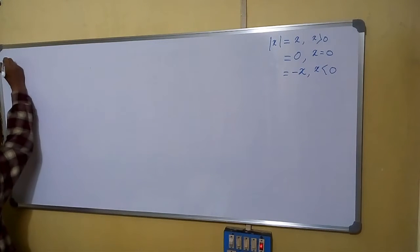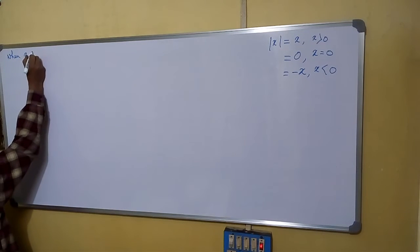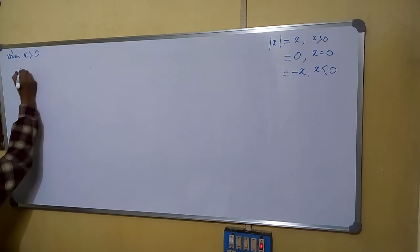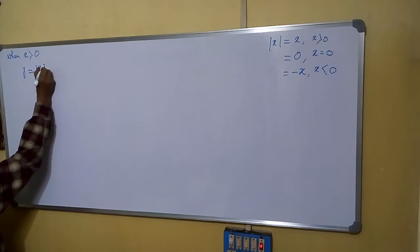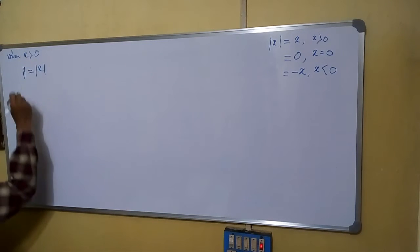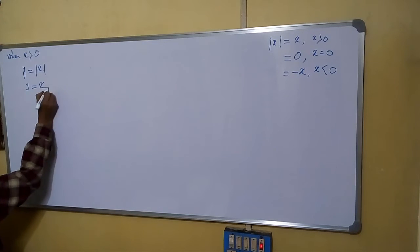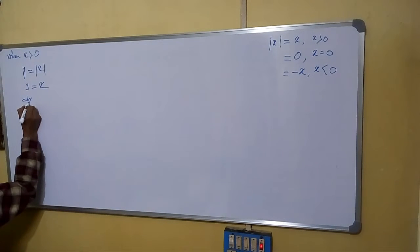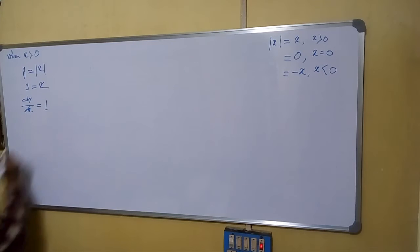First, we are calculating when x is greater than 0. That means, suppose we are assuming y equals mod x and x is greater than 0, so y equals x. As x is greater than 0, mod x equals x. So we can say dy/dx equals 1.